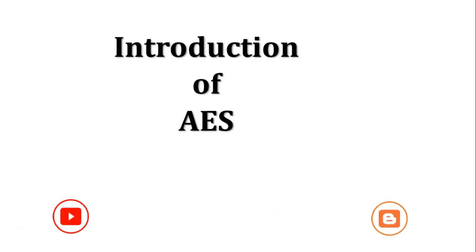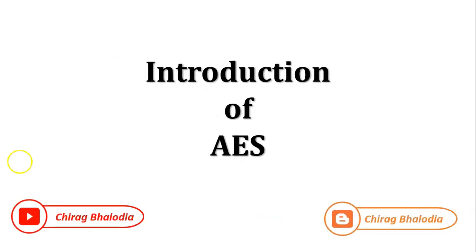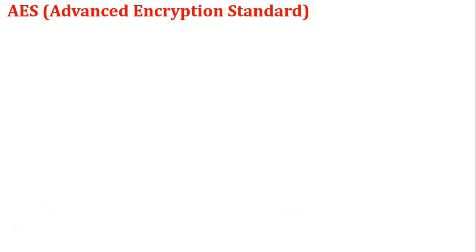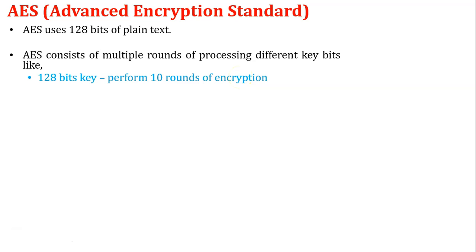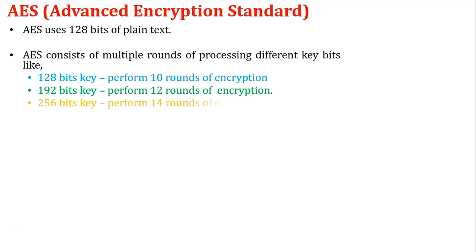Let's start with the first topic: introduction of AES. AES stands for Advanced Encryption Standard. This algorithm uses 128 bits of plain text as input, and another input is the encryption key, which can be in different sizes. A 128-bit key performs 10 rounds of encryption, a 192-bit key performs 12 rounds, and a 256-bit key performs 14 rounds.